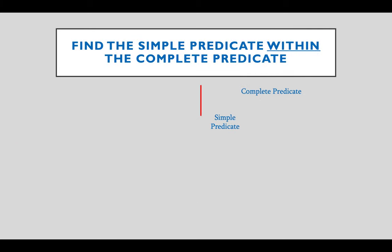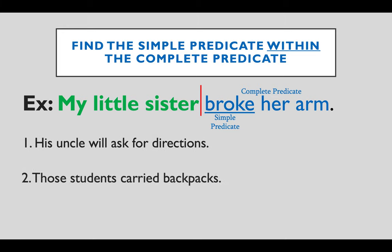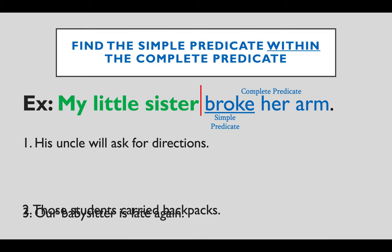A simple predicate is the main verb or verb phrase in the complete predicate. A verb phrase is a helping verb plus a main verb. Find the simple predicate within the complete predicate. Like in the example: my little sister broke her arm — broke is the simple predicate, broke her arm is the complete predicate. Practice: his uncle will ask for directions — will ask; those students carried backpacks — carried; our sister is late again — is. Is is the correct answer.